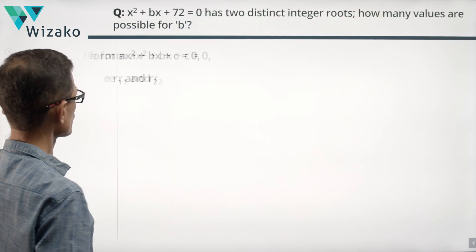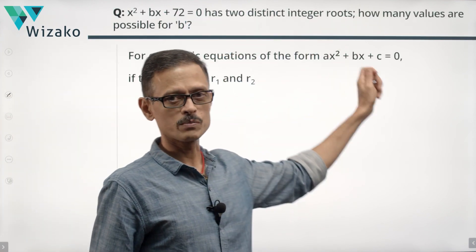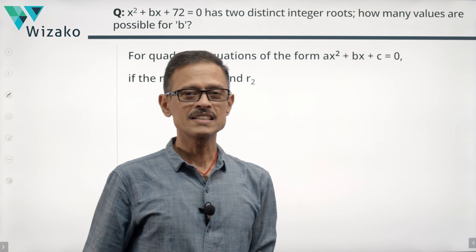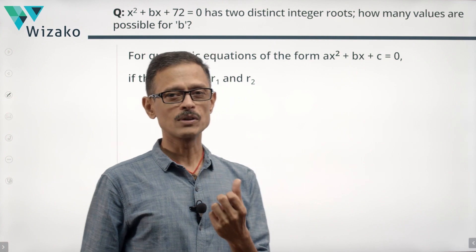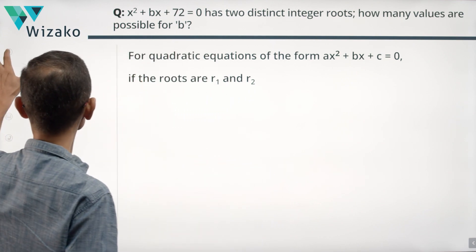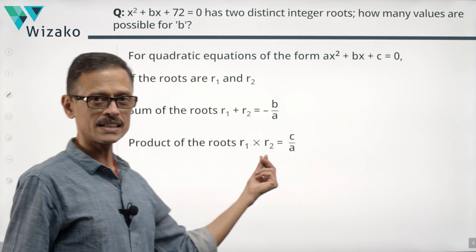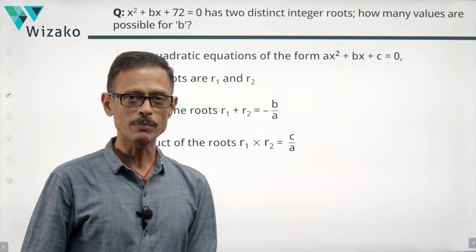For a generalized form of quadratic equation, AX squared plus BX plus C equals 0, let's say it's got two roots R1 and R2. Sum of its roots R1 plus R2 will be equal to minus B upon A and product of its roots R1 times R2 is equal to C upon A.